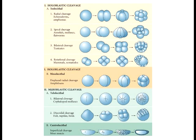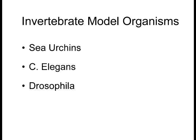Sea urchins have radial cleavage — cells are cut in half, then in half again, with cells undergoing mitosis and splitting evenly in the initial stages. For amphibians, cleavage is holoblastic because it encompasses the entire oocyte, but it's called displaced holoblastic cleavage because it's not proportional — the vegetal pole has much thicker yolk than the animal pole. As a result, Xenopus and other amphibians develop smaller blastomeres on top and much larger blastomeres on the bottom during cleavage.